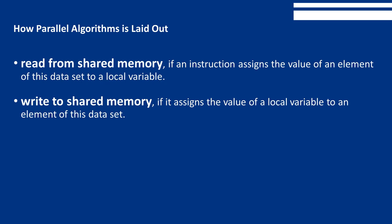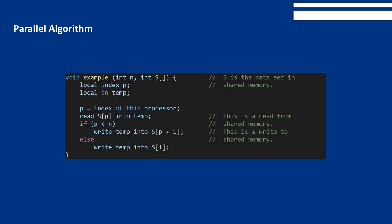The only instructions used for manipulating elements of the data set are reads from and writes into shared memory. For example, we never directly compare the values of two elements of the data set. Rather, we read their values into variables in local memory and then compare the values of those variables. We will allow direct comparisons to variables like n, the size of the data set.